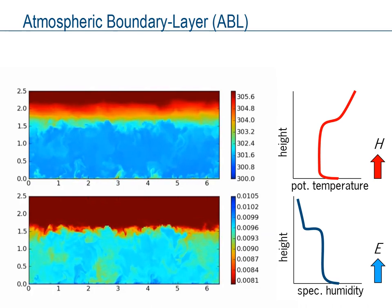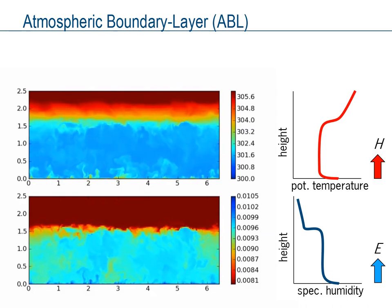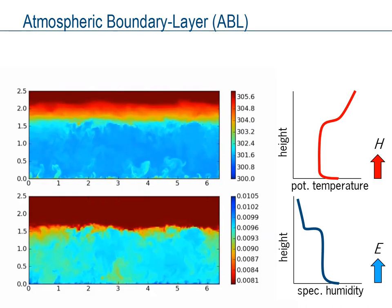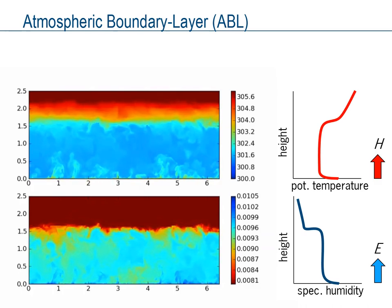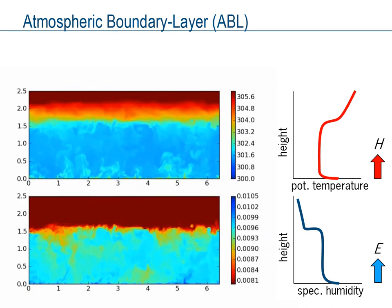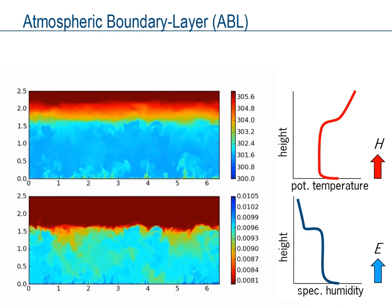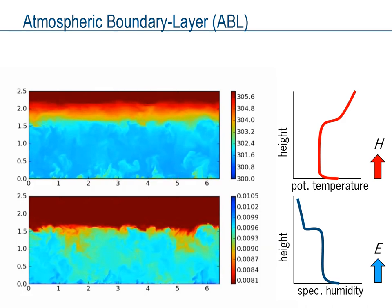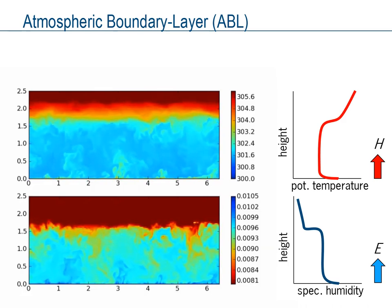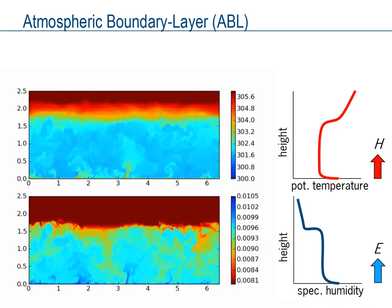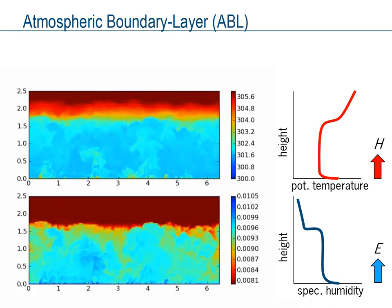You can clearly see the thermals moving upward from the surface, driven by the heating at the surface. Due to the strong mixing, mean temperature and humidity are rather uniform with height. At the top of the boundary layer, the turbulence interacts with the non-turbulent atmosphere above. Non-turbulent air is encapsulated into the boundary layer — so-called entrainment. Due to the entrainment, some dry patches of air enter the boundary layer, and the entrainment causes the boundary layer to grow.